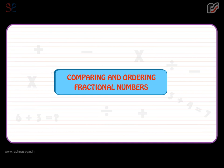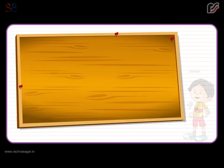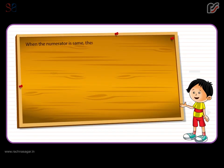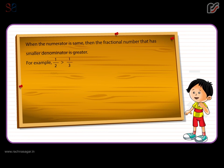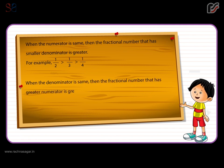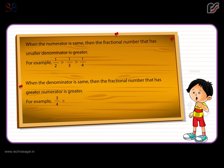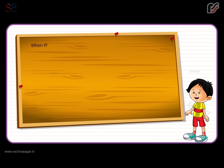Comparing and ordering of fractional numbers. When the numerator is the same, the fractional number with the smaller denominator is greater. For example, one by two is greater than one by three, which is greater than one by four. When the denominator is the same, the fractional number with the greater numerator is greater. For example, three by four is greater than two by four, which is greater than one by four.